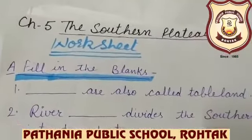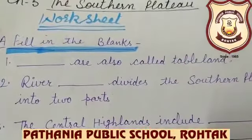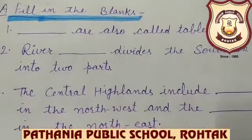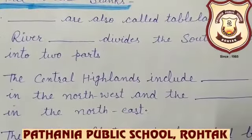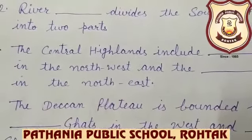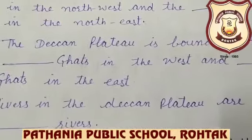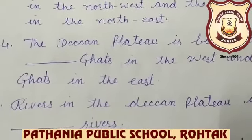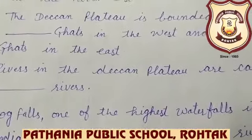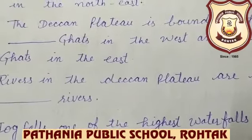The southern plateau worksheet you have to do in the notebook. Fill in the blanks: Plateaus are also called table land. Which river divides the southern plateau into two parts? The central highlands include dash in the northwest and dash in the northeast. The Deccan plateau is bounded by dash in the west and dash in the east. Rivers in the Deccan plateau are dash rivers. Jog Falls, one of the highest waterfalls in India, is located on the dash river. You have to read the chapter carefully to get the answers.